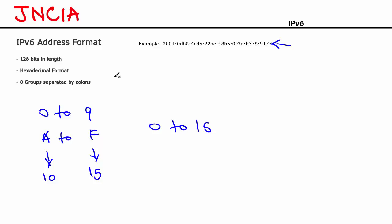IPv4 address was 32 bits in length while an IPv6 address is 128 bits in length. The IPv6 address is written in 8 groups — you can count 1, 2, 3, 4, 5, 6, 7, 8 — so 8 groups of hexadecimal characters. After every 4 characters you have a colon, so 8 groups separated by colons.